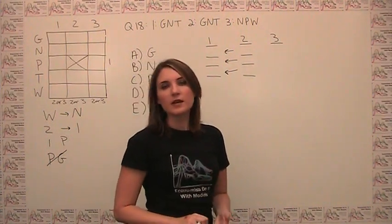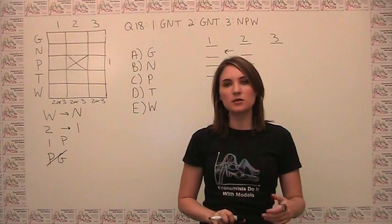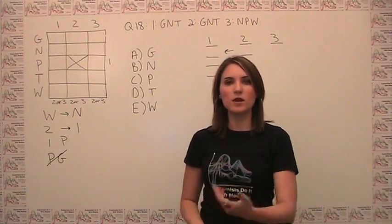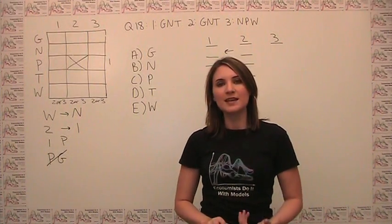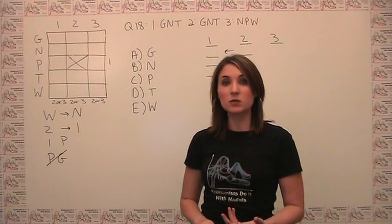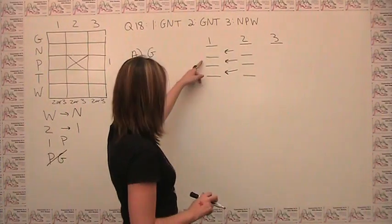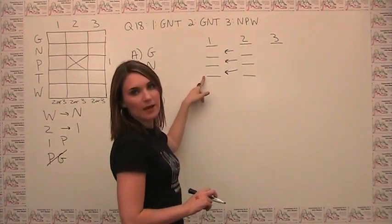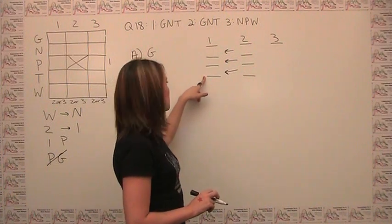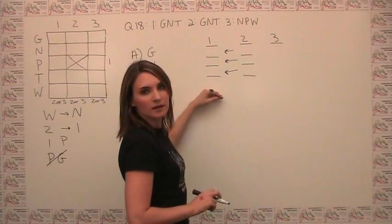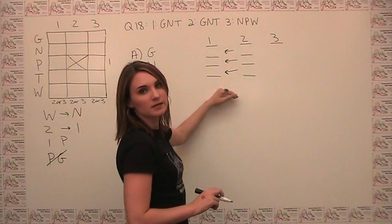Notice here that even though before we couldn't conclude that if a material is at center 1, it's also at center 2, now in this particular instance we can, because each center recycles at most three kinds of material, so we can't have anything stuck in extra here at center 1 and it's not at center 2.